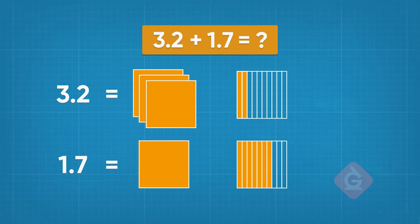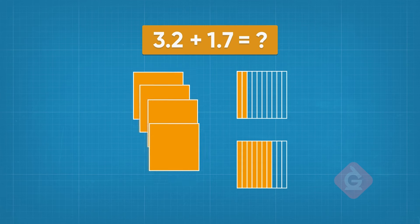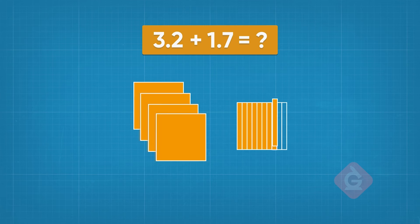Great job. Now, we just need to add these together, meaning you combine them and count the total. When we add those amounts together, we have 4 wholes and 9 tenths, which is written as 4.9.